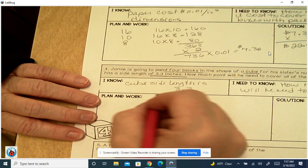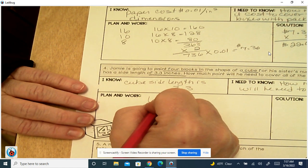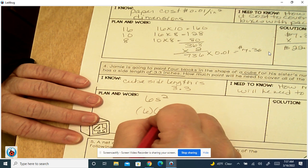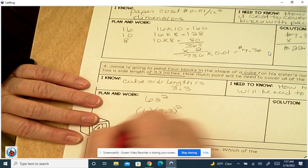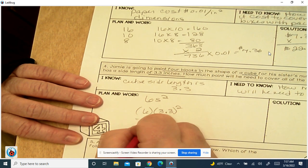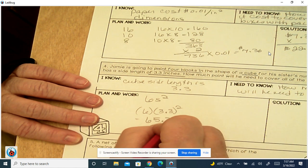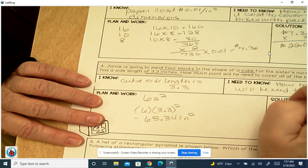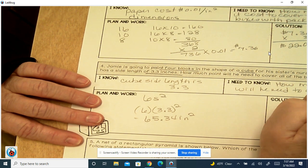Alright. The formula for surface area of a cube is 6 times side squared. So we have 6, and then we have 3.3, because that's the side, squared. And that gives us 65.34 inches squared per one box. So then we take that 65.34.